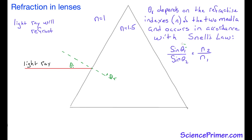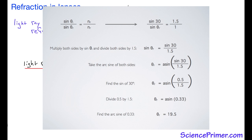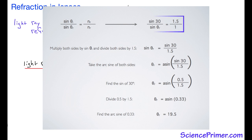With this information we know three of the four variables of the Snell's law equation. To determine the path the light ray will take upon entering the prism, all we have to do is solve for the second angle, which in this case is theta r, the angle of refraction. The triangle is an equilateral triangle and the light ray is parallel to the bottom, so theta i, the angle of incidence, is 30 degrees. Solving for theta r with an angle of incidence of 30 degrees and refractive indexes of 1 and 1.5, the angle of refraction is 19.5 degrees.